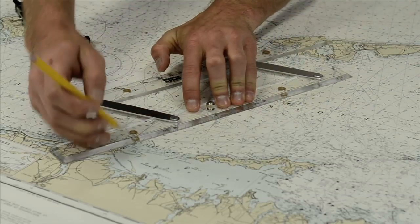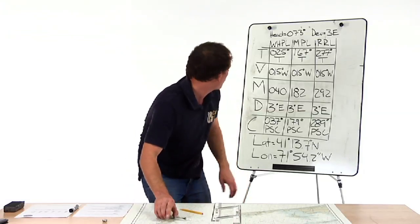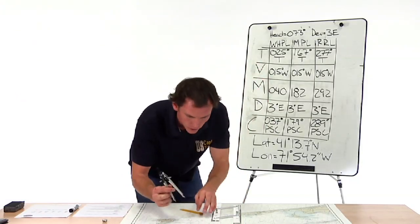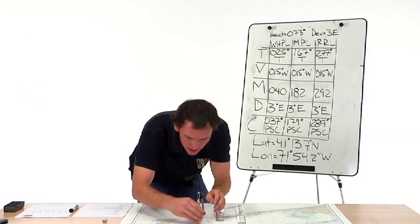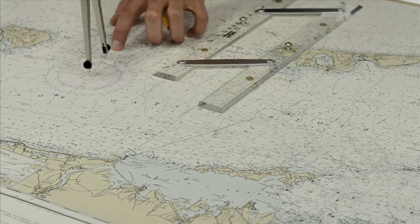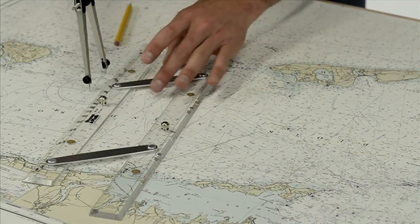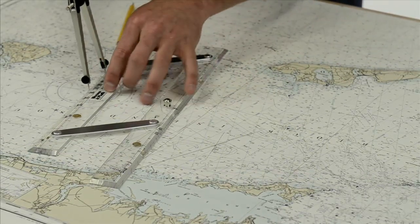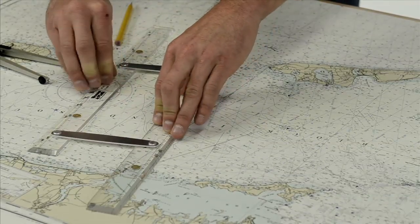Then we strike a line from Watch Hill Point Light and we go on to Montauk Point Light, 167 degrees true. Again the center of the compass to 167 degrees true. This compass, this is a good trick for improving your accuracy. Then you know you're on the two points. You bump your parallel rules up next to it and now we have 167 degrees true. We walk it to Montauk Point Light.